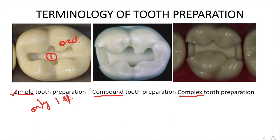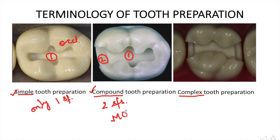The next is compound tooth preparation — a tooth preparation which involves two surfaces. For example, in this case the occlusal and one proximal surface is involved, which makes it a compound tooth preparation. Cavities can be named in such cases as mesio-occlusal or disto-occlusal preparations.